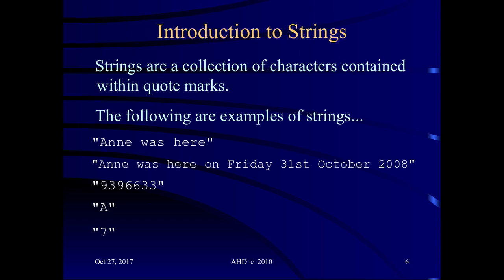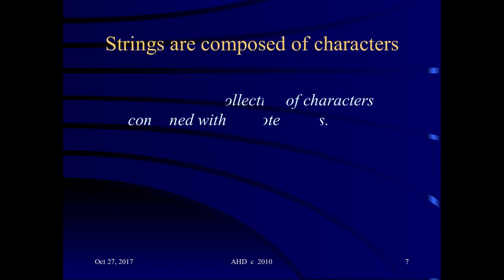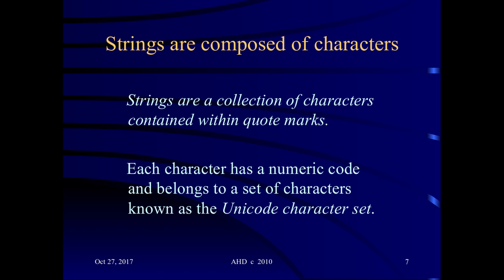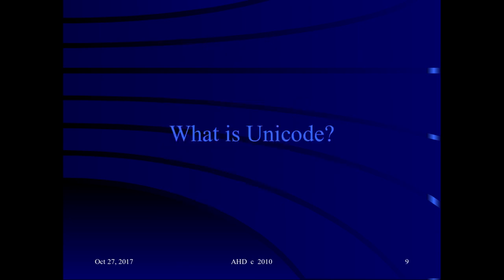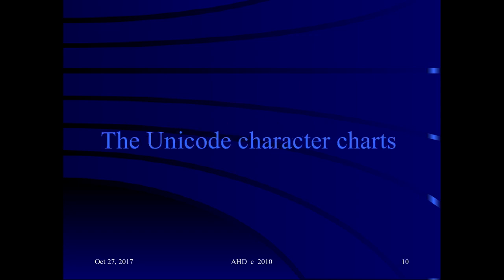Strings are composed of characters contained within quote marks. Each character has a numeric code which belongs to a set of characters known as the Unicode character set. Let's have a look at the Unicode character set. Unicode includes all the characters A to Z, the numbers 0 to 9, punctuation marks, the space character, and many other characters.